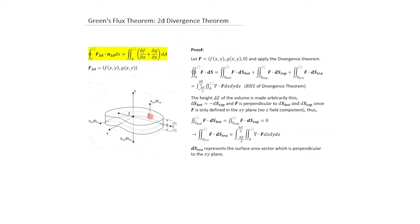We have three discrete surfaces: the top surface, the bottom surface, and the side surface, which is called the transverse surface. Applying the Divergence Theorem, the flux integrated over the closed surface equals the sum of flux from the top, bottom, and transverse surfaces. On the right-hand side, we integrate the divergence of the vector field over the volume, which is the area of the region times the height between delta-Z over 2 and minus delta-Z over 2.